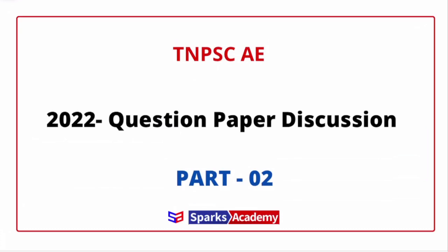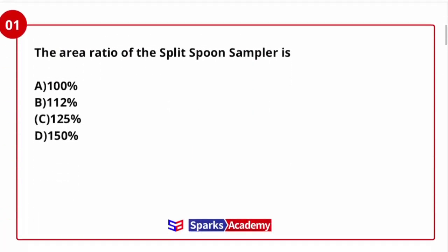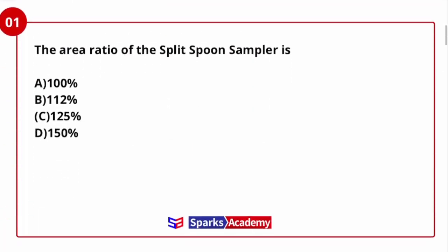Let's move to the first question. The area ratio of a split spoon sampler is — options: 100, 1:12, 1:25, or 1:50?